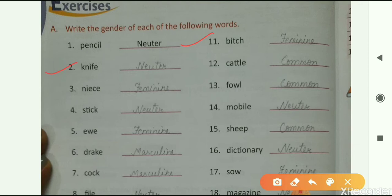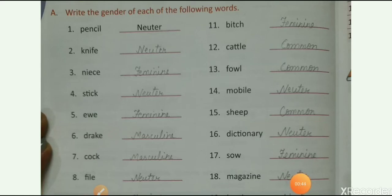Knife, second one knife. Knife is also neuter gender. Then niece. Niece is feminine. So write here, feminine F-E-M-I-N-I-N-E. The next one is stick. Stick is again neuter gender. Write here, neuter N-E-U-T-E-R.